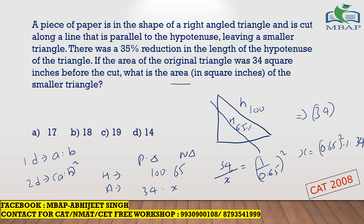What is 65 squared? For any number ending in 5: the last two digits are 25, and multiply 6 by the next number 7 to get 42, so 65² = 4225. Therefore 0.65² = 0.4225, meaning the new area is approximately 42 percent of 34. Since 10 percent of 34 is 3.4, the nearest answer for 42 percent of 34 is 14 square inches. Again, solved with just ratio and percentage change from classes 7, 8, and 9.